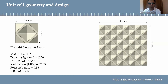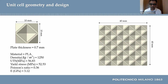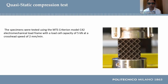The test specimens were fabricated by FFF using Ultimaker PLA filament of 1.75 mm, by our colleagues at NTNU University in Melbourne. The test specimens were tested using the MTS Criterion Model C42 electromechanical load frame with a load cell capacity of 5 kN, at a crosshead speed of 2 mm per minute.